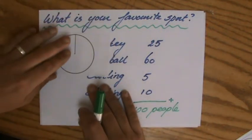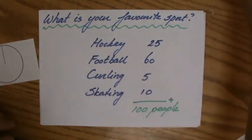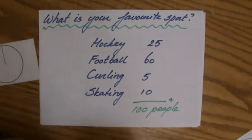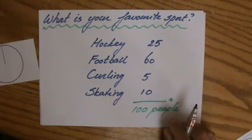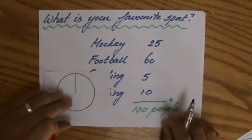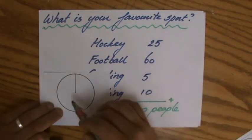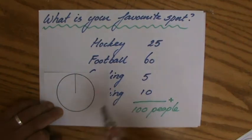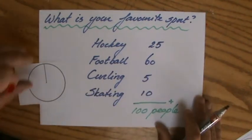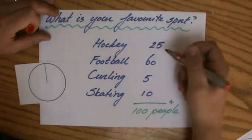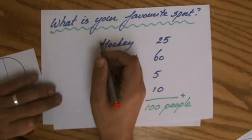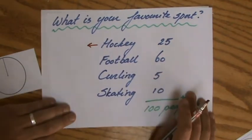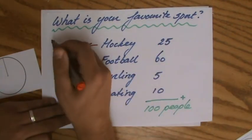How do I calculate the amount of degrees for these individual sports? How many degrees do they get on the pie chart? Well, in total there are 360 degrees to divide. Which part of the people like hockey?